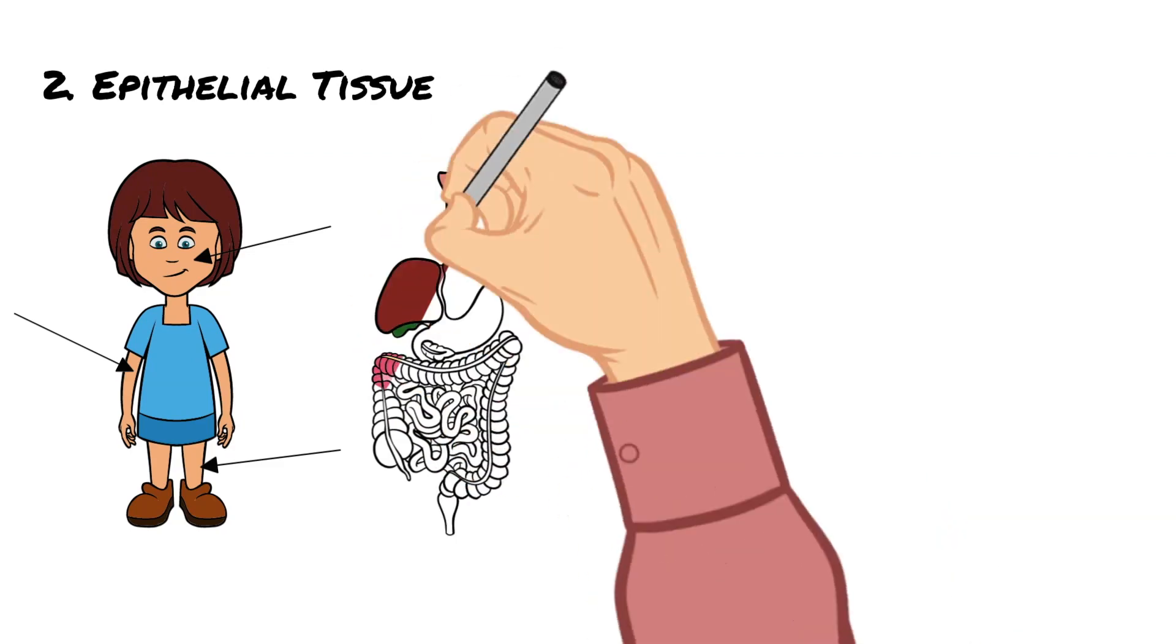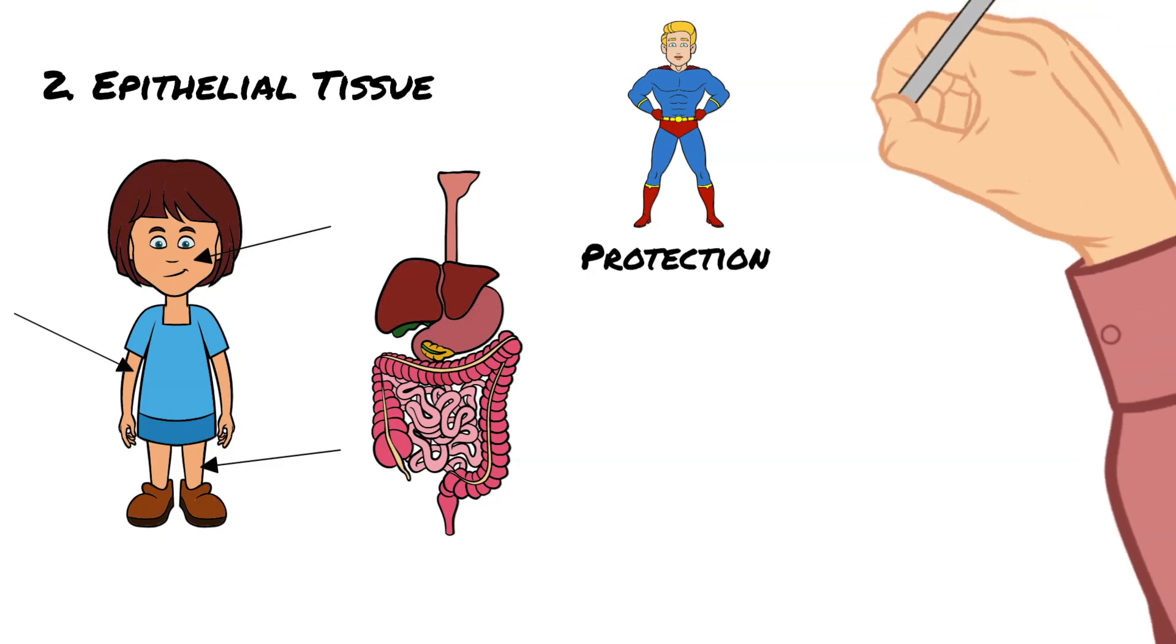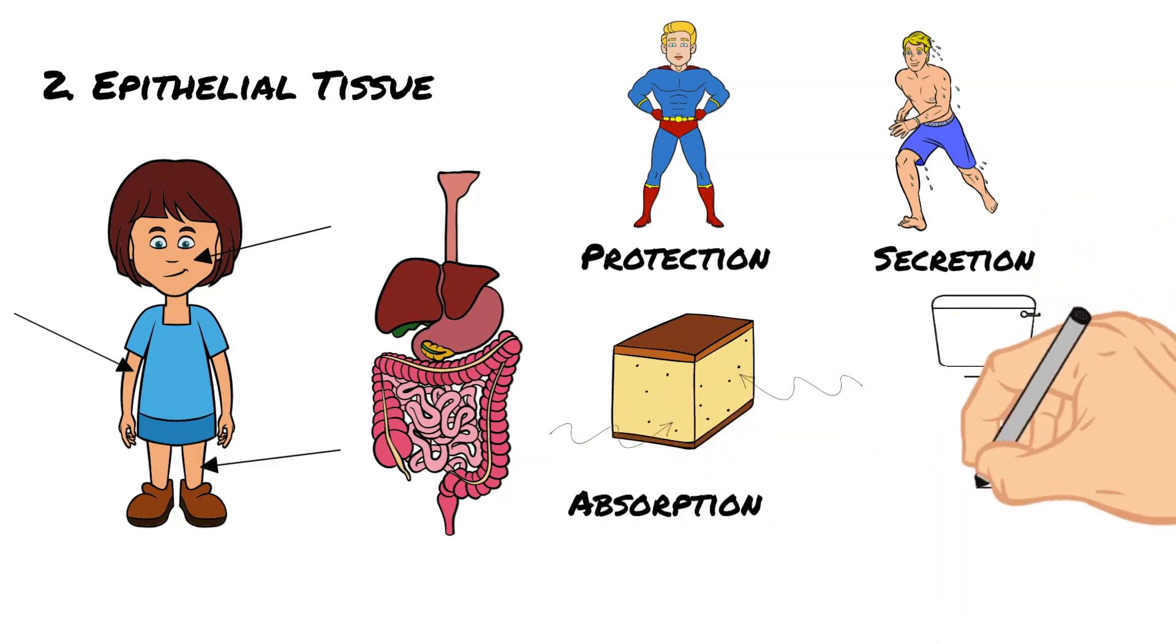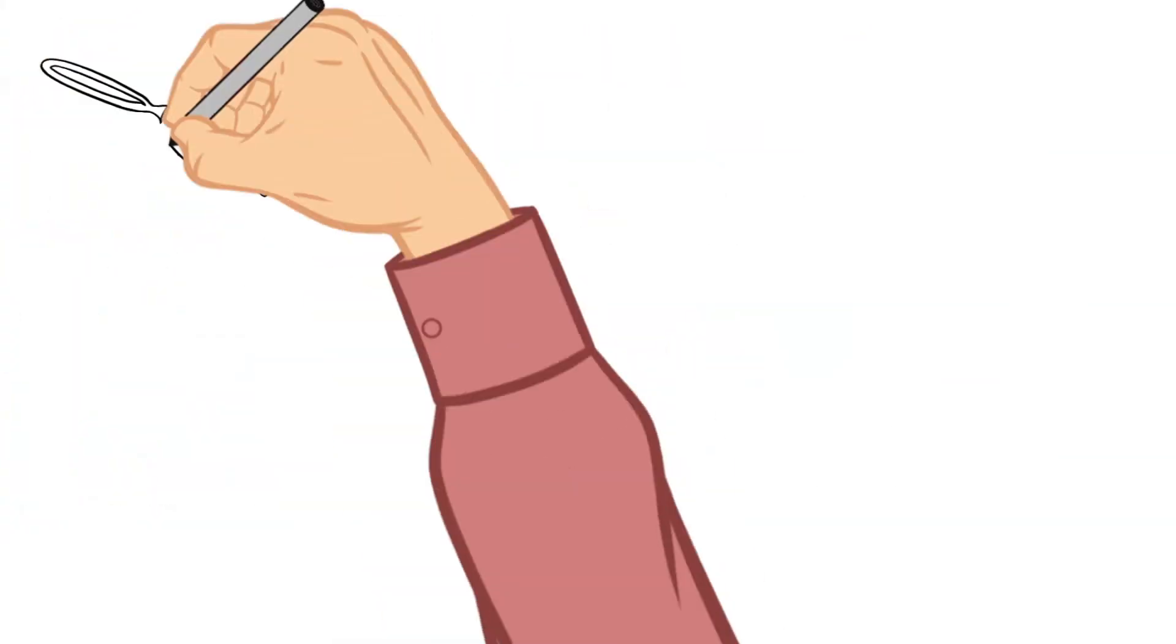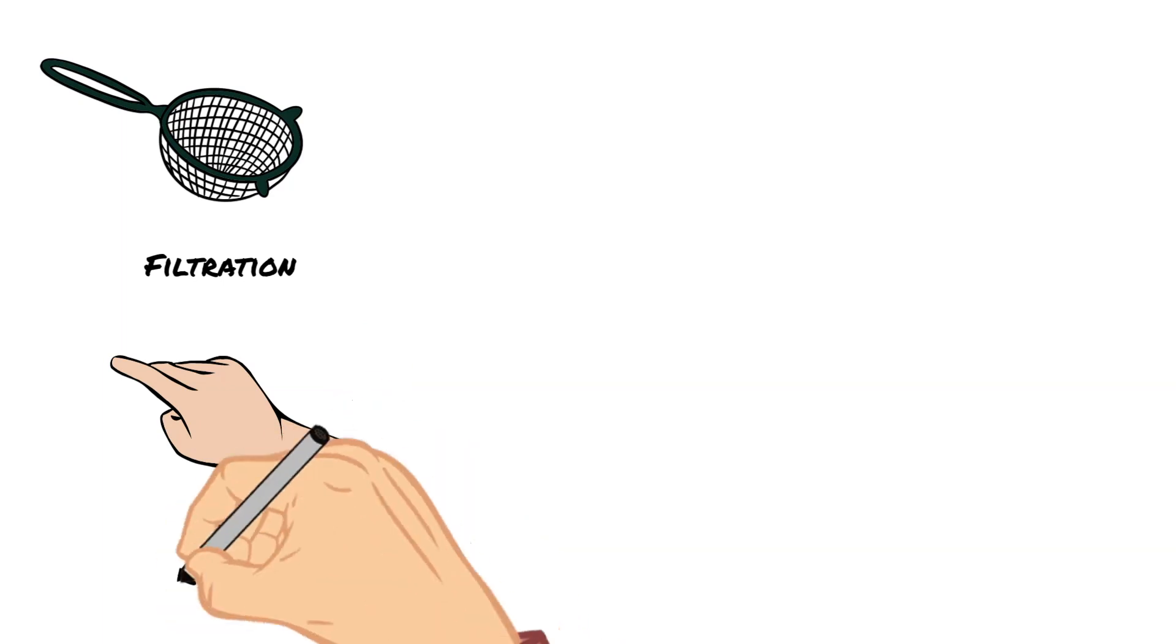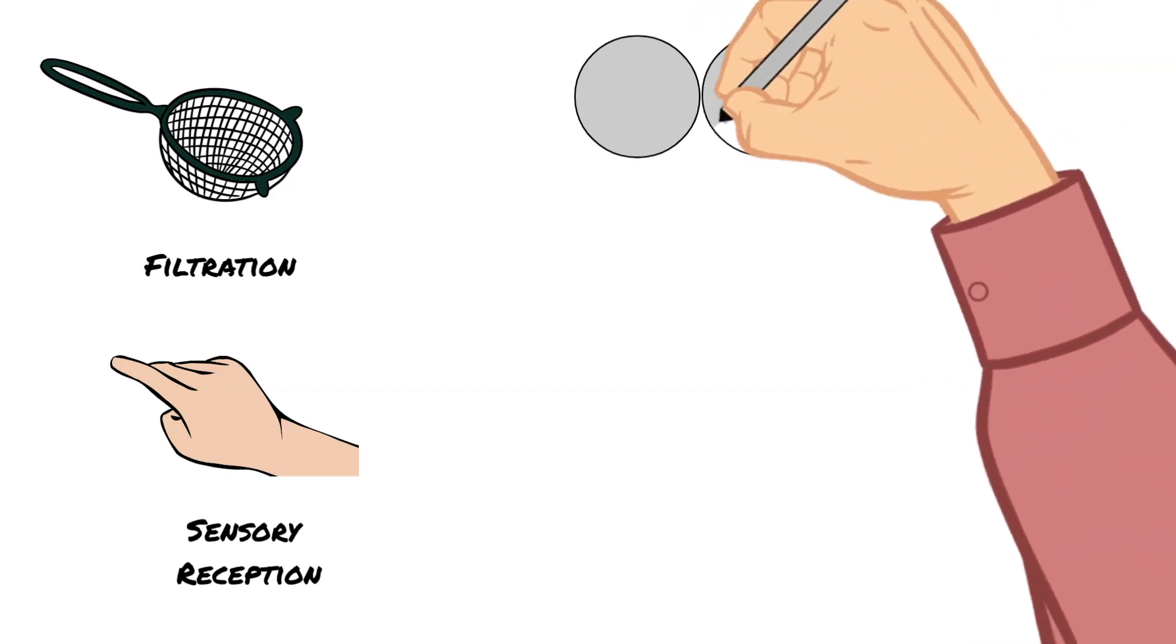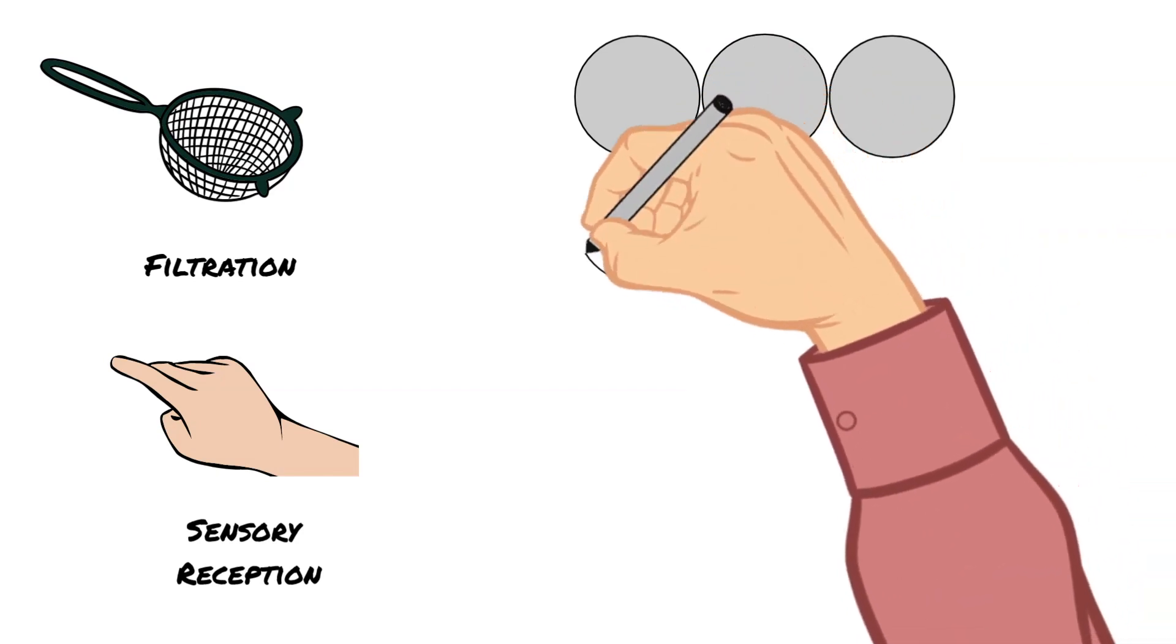They perform a variety of functions that include protection, secretion, absorption, excretion, filtration, and sensory reception. The cells in epithelial tissue are tightly packed together with very little space between them, commonly called the intercellular matrix.